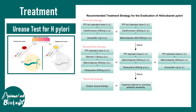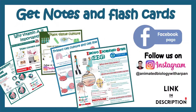Chronic gastritis is treated by addressing the underlying cause. The urease test is a good diagnostic tool for H. pylori, which can be eradicated with combinatorial antibiotic therapy — first, second, and third line therapies are available. It's important to treat promptly because long-term H. pylori infection can lead to adenocarcinoma of the stomach.